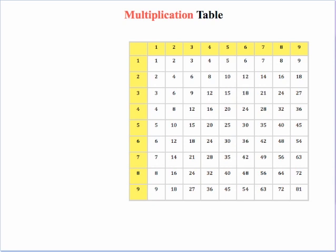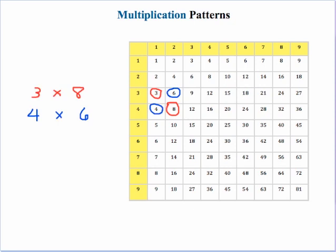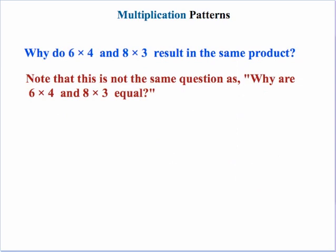Now let's look at multiplication and the table. What if we look diagonally? Take 3 and 8, and 4 and 6 — we have 24 for both. Now the question is: why do 6 times 4 and 8 times 3 result in the same product? That's not quite the same as just observing they're both equal to 24 — we've already answered that. Let's explore why.